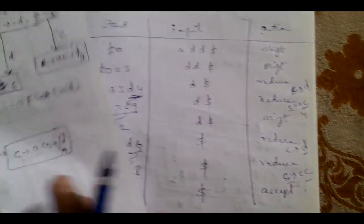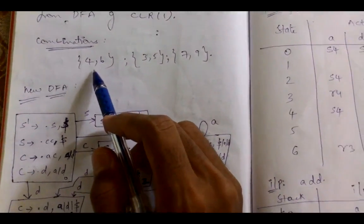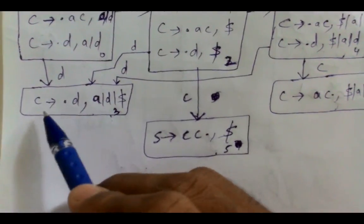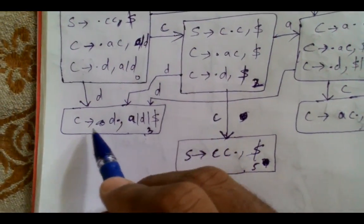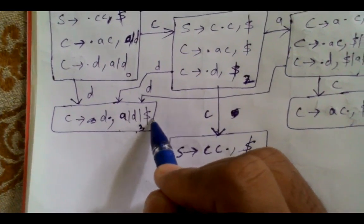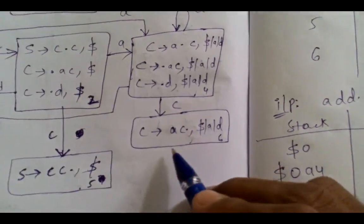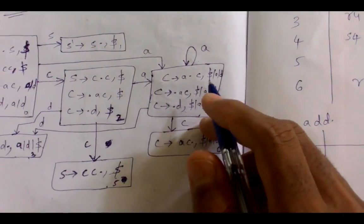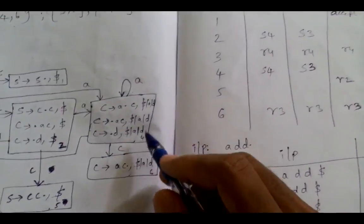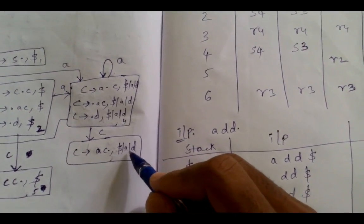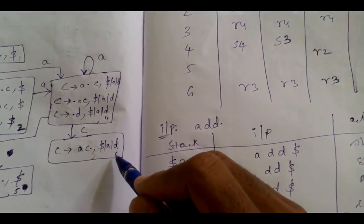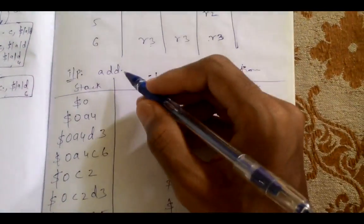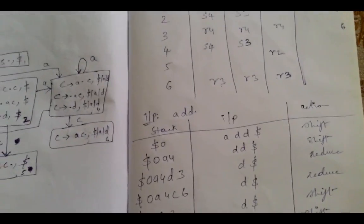The states that can be combined are: {4,6}, {3,5}, and {7,9}. For the combined state {4,6}: C → d• with lookaheads merged to a/d/$. Similarly, C → aC• with lookaheads combined to a/d/$. So states are reduced in LALR(1). In the parsing table, reduce R3 (C → aC) is placed in all three lookahead columns: a, d, and $. The parsing for the input is also similar to CLR(1) parsing.